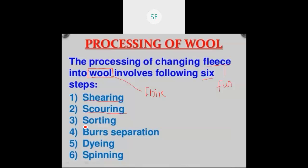The grease protects the animal from cold weather or snowfall. We want to remove that grease from the fur or the fleece. Next is sorting. Sorting means we are going to separate the wool based on quality. The Angora goat gives very fine quality wool, and the Kashmiri goat also gives very fine quality wool. We sort the fur or fleece based on their form. After sorting, we do scouring — removing any rough fur present.